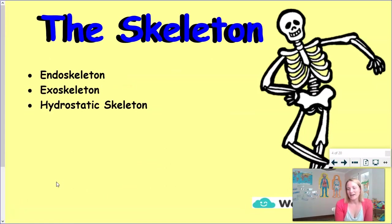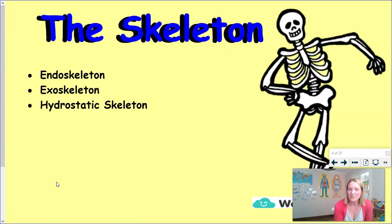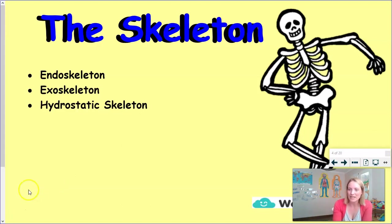I've got three more words that you can add to that science dictionary you're developing — you should have close to 20 words by now. The three words you can add today are endoskeleton, exoskeleton, and hydrostatic skeleton. So let's find out what each of those three words mean.